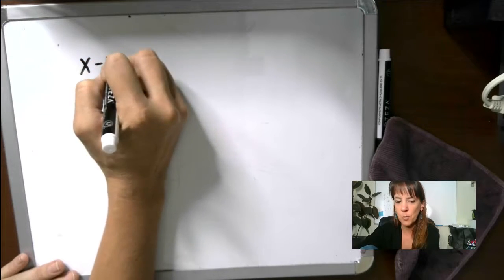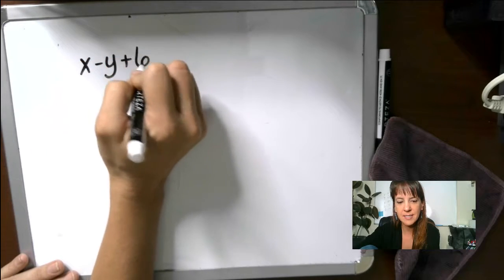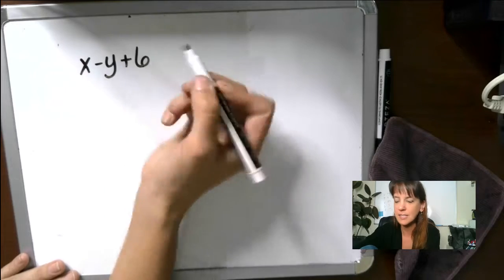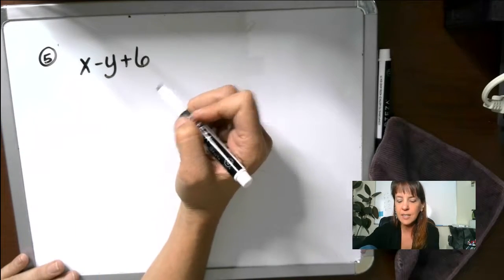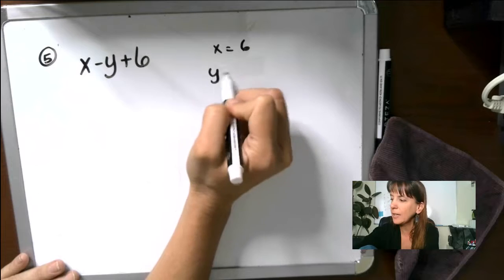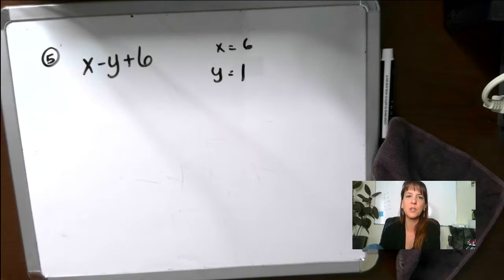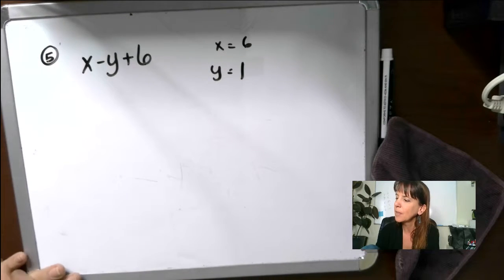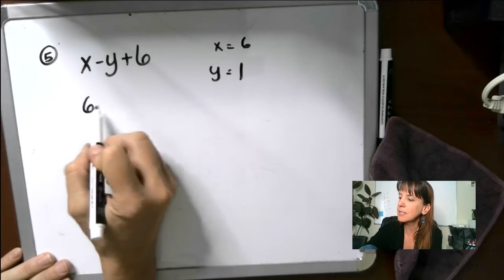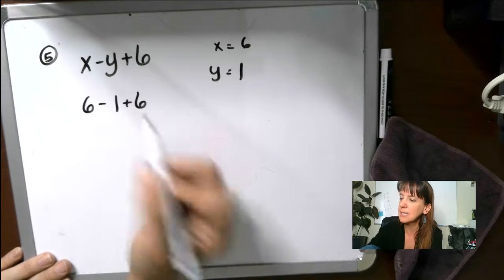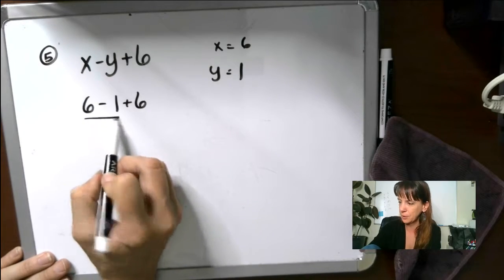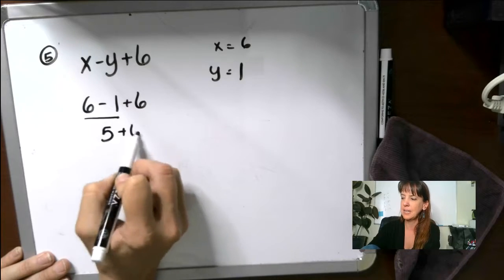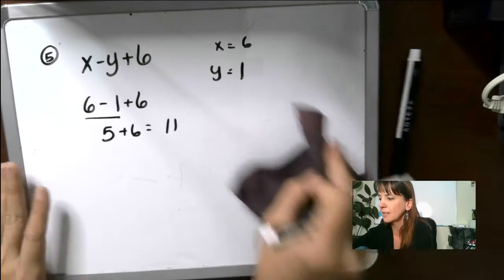All right. So X minus Y plus 6. Am I on that one? Yes. That's number five. I should probably number these. That would be helpful. X equals 6, Y equals 1. Go ahead and pause the video and try this one on your own and see if you've got it. Okay. So we've got 6 minus 1 plus 6. Again, we're going to want to do this guy first. That's going to give us 5 plus 6. That gives us 11. Excellent.